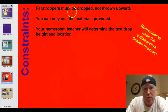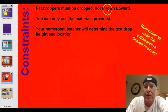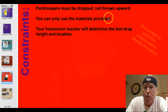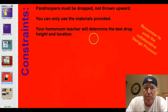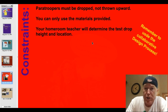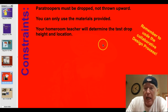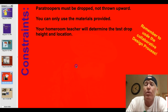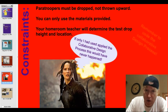Your constraints for today: your paratrooper must be dropped, not thrown upward. You can only use the materials provided, and your homeroom teacher will determine the test drop height and location. Remember to use the collaborative design process.